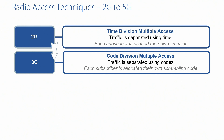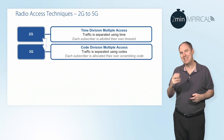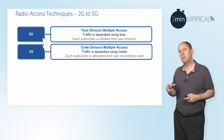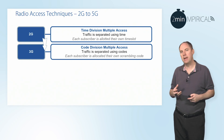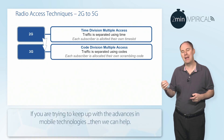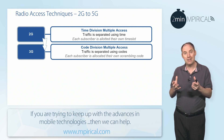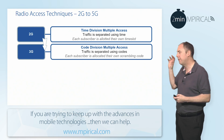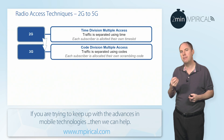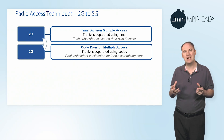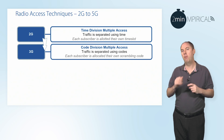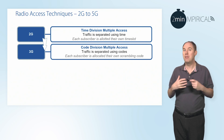As we moved into 3G, the UMTS-based system, we started using the term CDMA — Code Division Multiple Access. To identify multiple access for different users, instead of being time-based, it really focused on the use of codes, CDMA codes, spreading the signal, and therefore putting different users on top of each other with different codes.